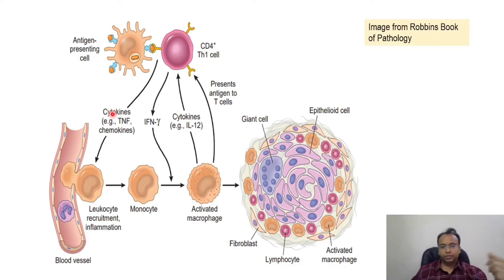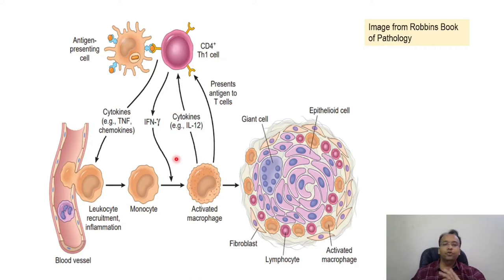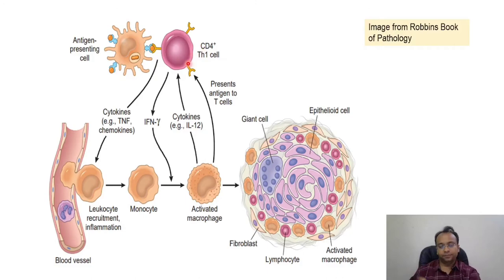What happens in granulomatous inflammation? Let me explain in detail. This is a very beautiful diagram from Robbins' book of pathology. Whenever this antigen enters our body, antigen-presenting cells will present this antigen to the CD4 T helper lymphocyte — particularly Th1 cells. Over the antigen-presenting cell, there is a molecule known as MHC class 2 — shown in blue — which helps in presenting the antigen to the CD4 T helper cell.